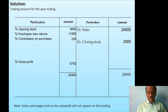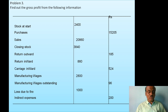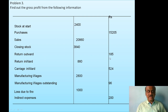This is a CPT problem — a CA Foundation course problem. Find out the gross profit from the following information: stock at start (opening stock) 2,400; purchases 15,205; sales 20,860; closing stock 3,840; return outwards 185; return inwards 860; carriage inwards 524; manufacturing wages 2,800; manufacturing wages outstanding 96; loss due to fire 1,000; indirect expenses 200.